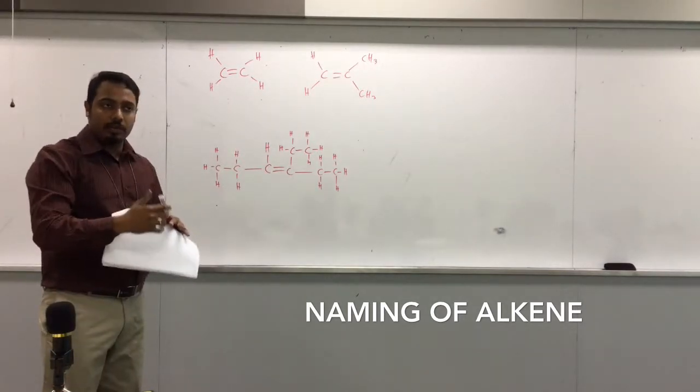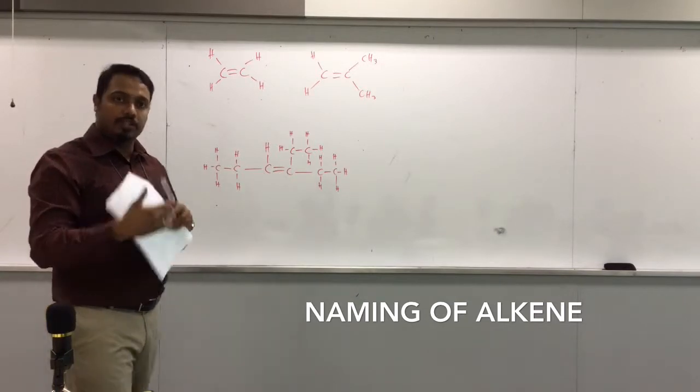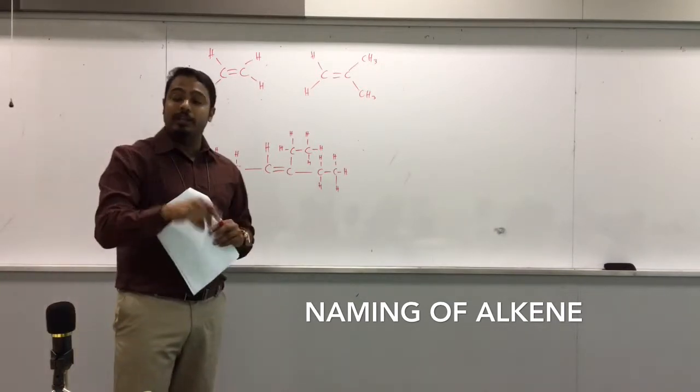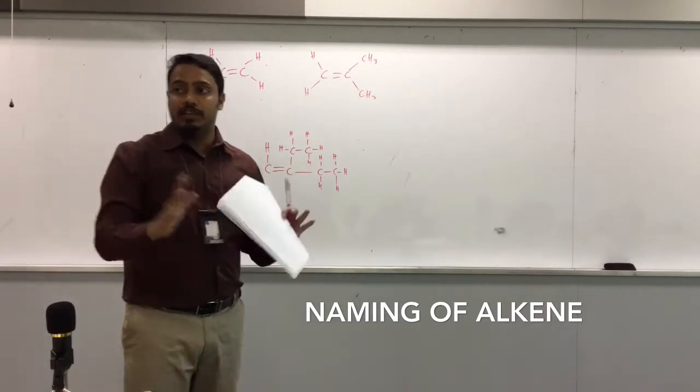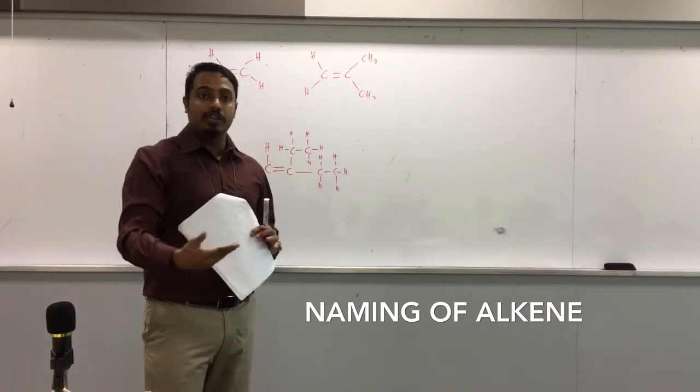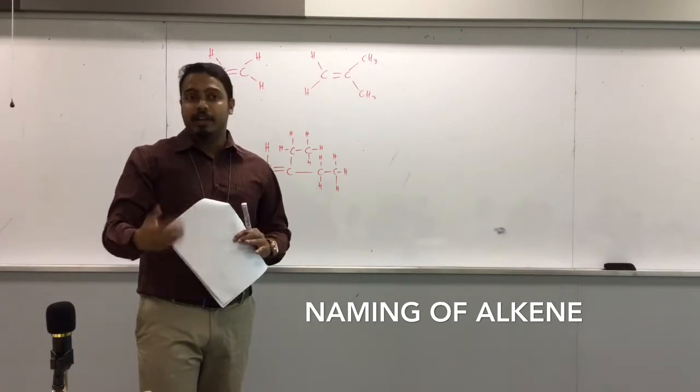You locate the double bond and then your longest chain must contain the double bond in it. And you will count in a way that your double bond will get the smallest number. Everything else kind of sets after that, right? So nothing to think about in terms of numbering anymore.